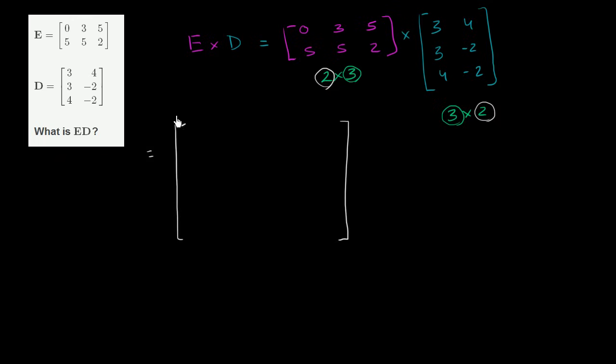So the way we get the top left entry, it's going to be this row times this column. If you're familiar with the dot product, we're essentially going to take the dot product of that and that. If you have no idea what that is, I'm about to show you. This entry is going to be 0 times 3 plus 3 times 3 plus 5 times 4. So that is the top left entry. And I already see that I'm going to run out of space here, so let me move this over to the right so I have some breathing room.